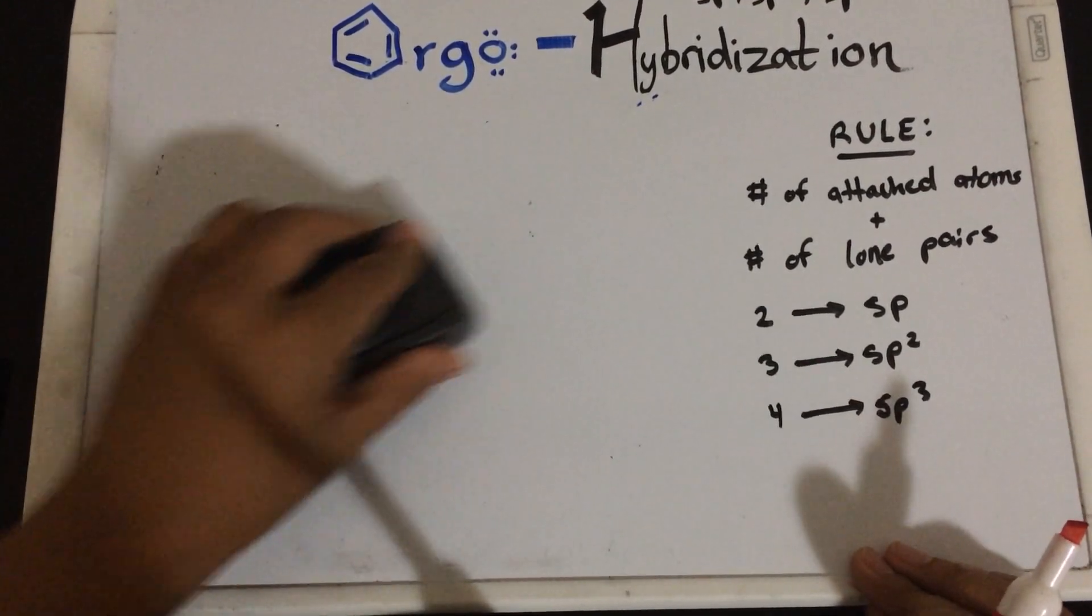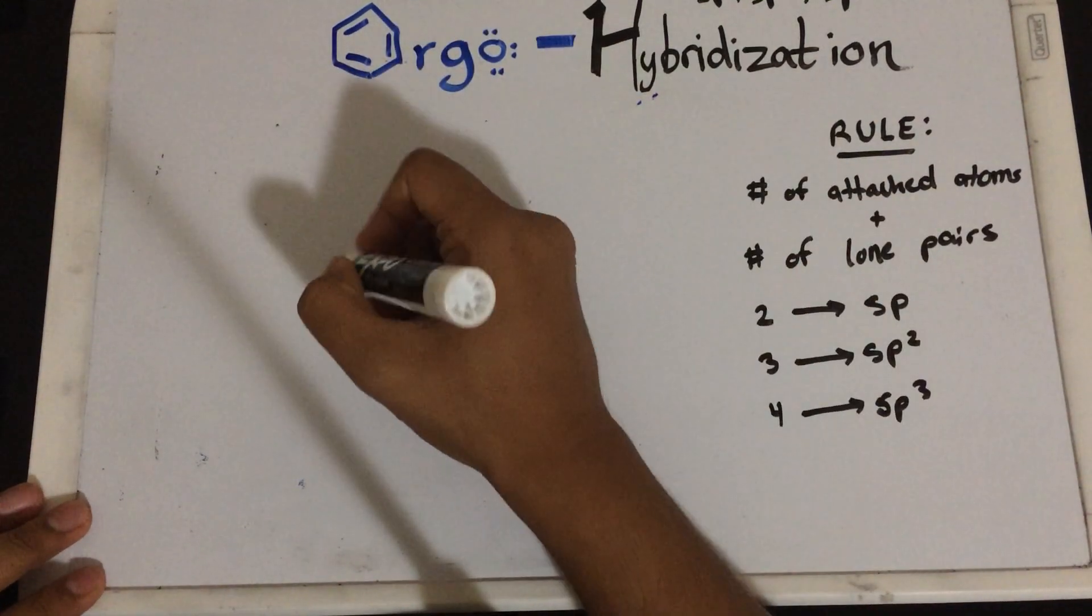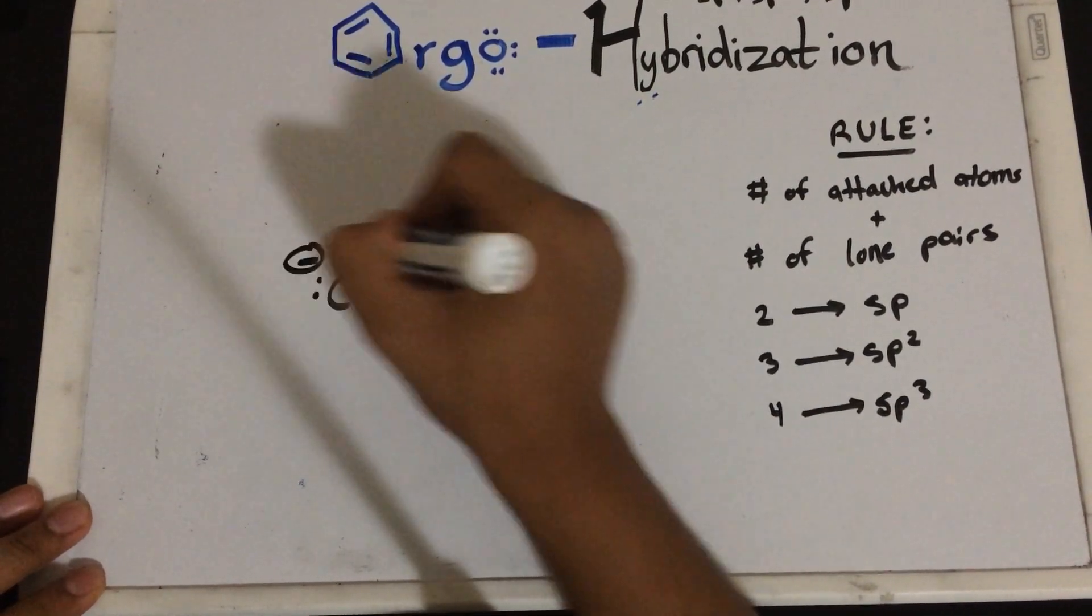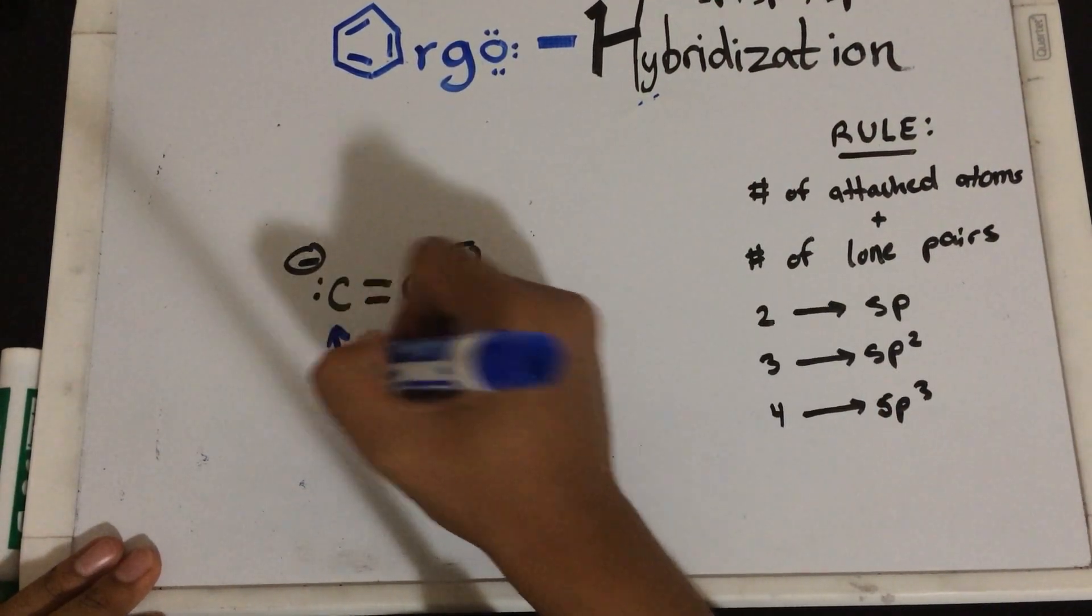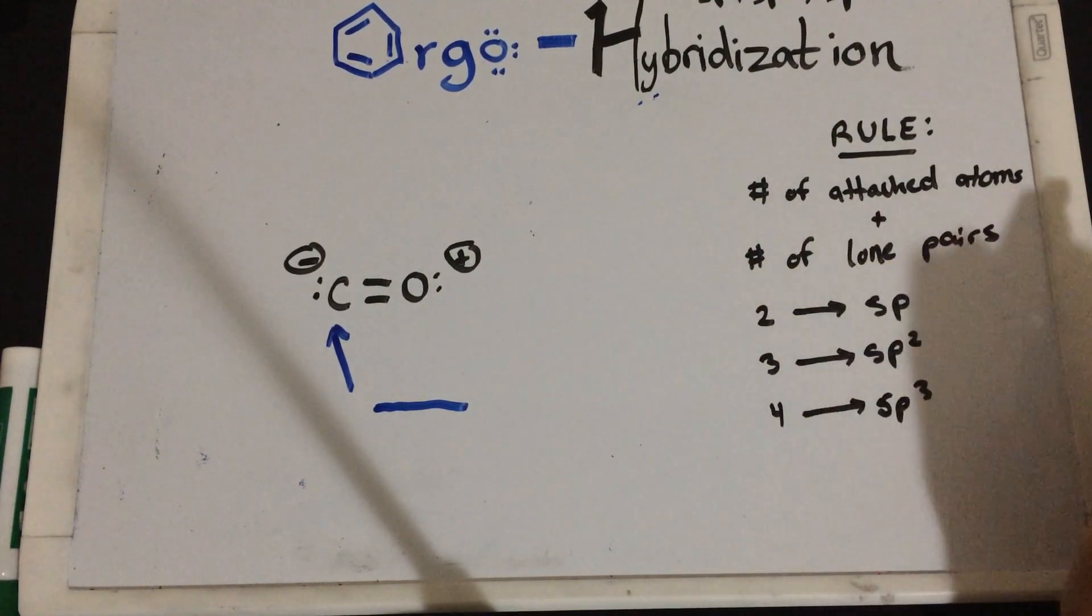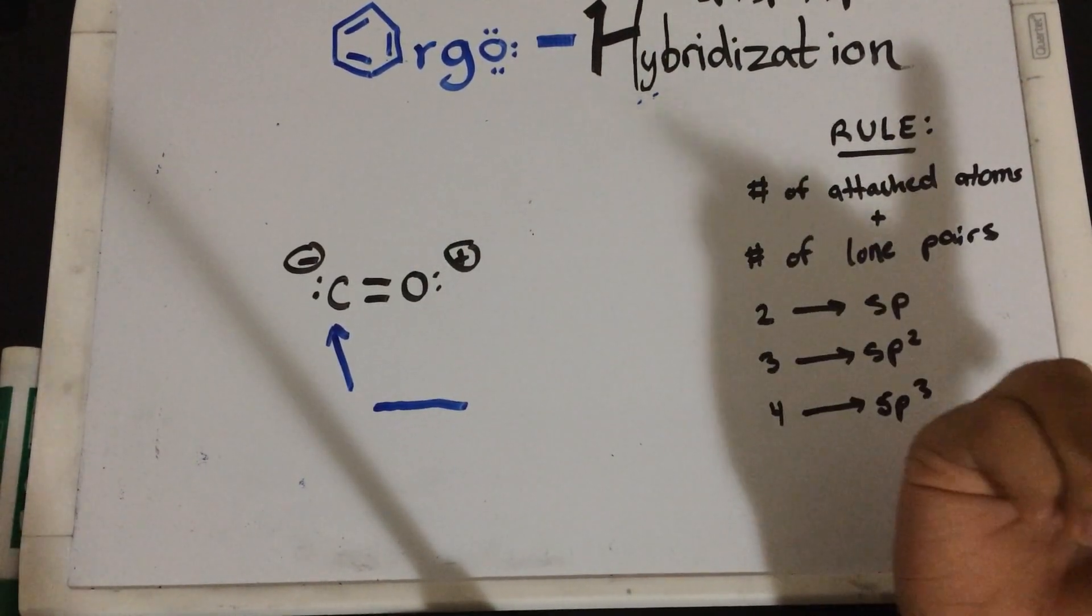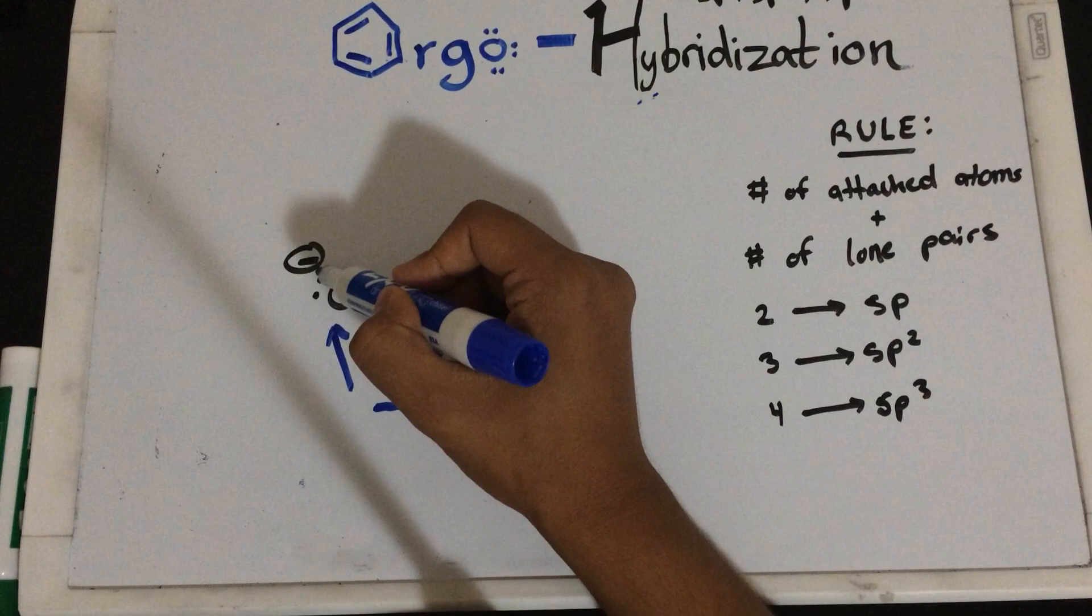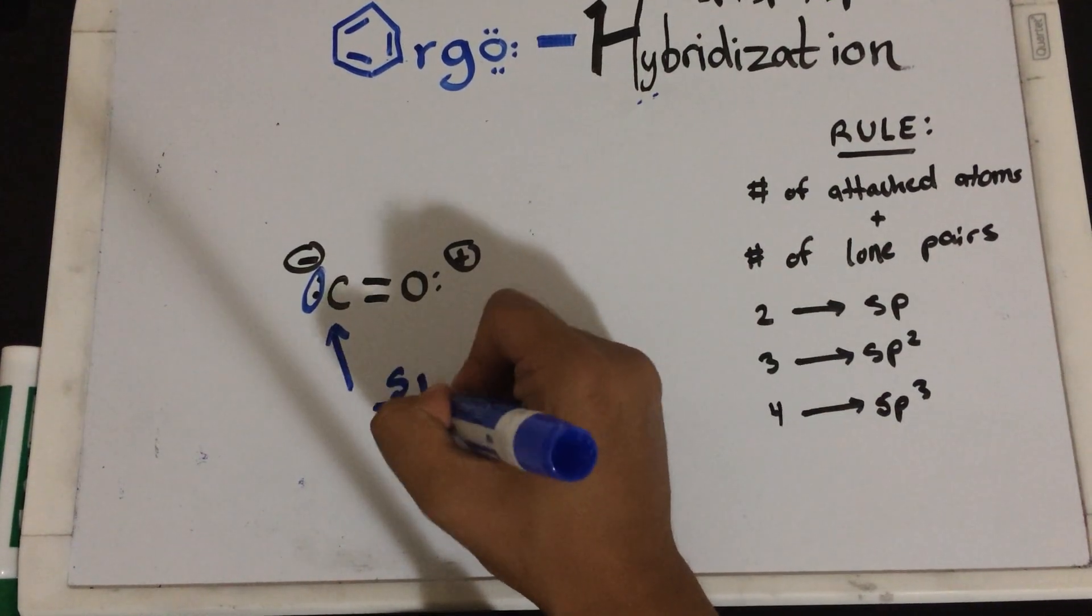Now, let's look into another example of SP hybridization. Let's do carbon monoxide, CO, this being negative, positive. So, now you might be asked, what is the hybridization of this carbon? Same thing, just follow the simple rule. Number of attached atoms, don't worry about the double bond. Look at how many atoms are bonded to this carbon. So, we have one, which is oxygen, and how many lone pairs does it have? Carbon has one lone pair. So, it has one lone pair, one attached atom, so that's two. So, this is SP hybridization.